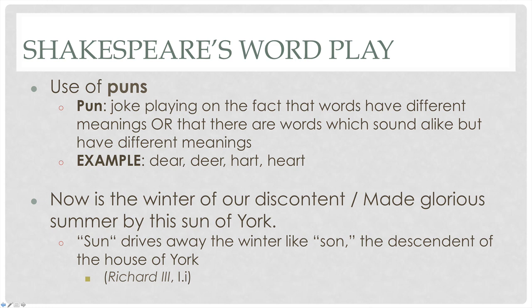Additionally, Shakespeare is famous for using puns — a joke playing on the fact that English words have different meanings, or that words sound alike but have different meanings. For example: 'Now is the winter of our discontent made glorious summer by this sun of York' — 'sun' driving away winter, s-u-n, or s-o-n, meaning the descendants of the house of York from Richard III. When we see words spelled similarly, we have to ask: should we be pronouncing them similarly? And how do these words' meanings relate to each other? Might Shakespeare be spinning a long-winded pun to have fun with words but also make a deeper point?